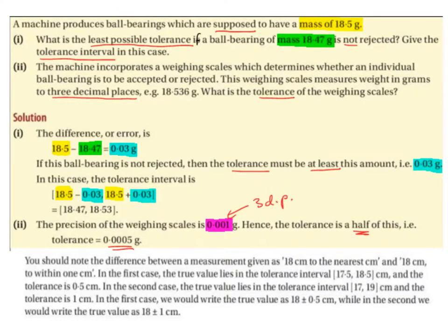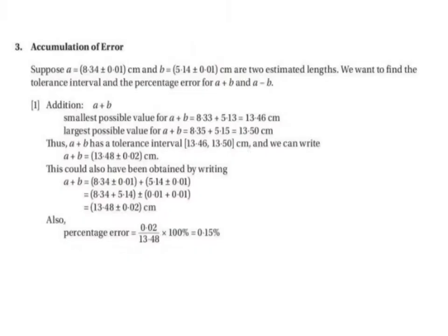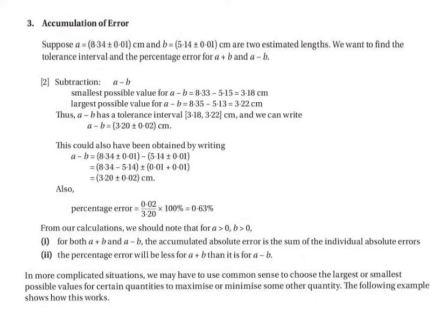Be very careful with the phrasing of the question. Part 3: Accumulation of error. Suppose we have two estimated lengths A and B. To find the tolerance interval and percentage error for A plus B, or for A minus B, we follow specific steps. In more complicated situations, we may have to use common sense to choose the largest or smallest possible values for certain quantities to maximise or minimise some other quantity.